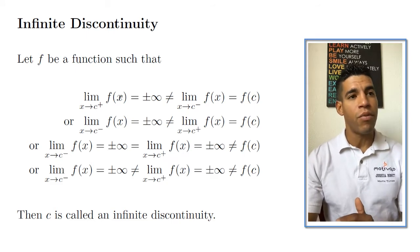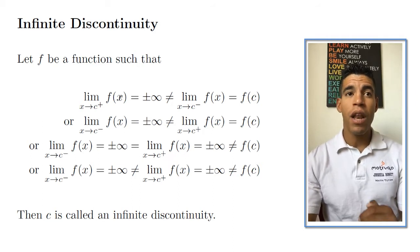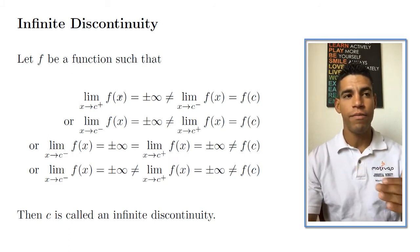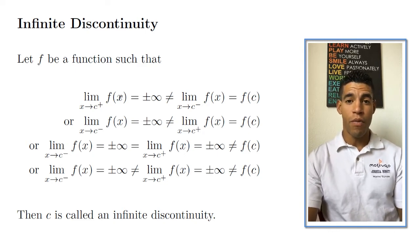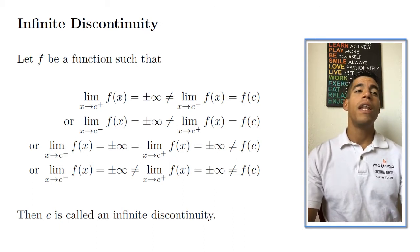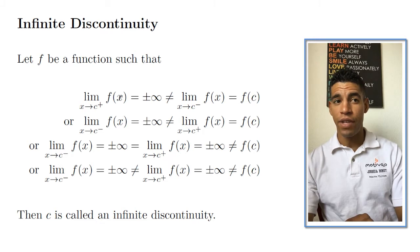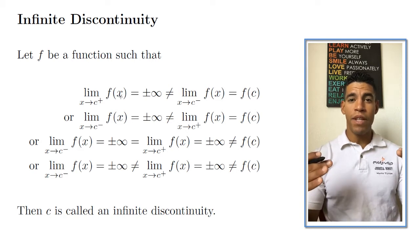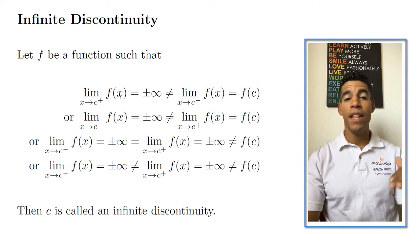The first condition: the limit as x approaches c from the right of f(x) is plus or minus infinity, which is not equal to the limit as x approaches c from the left, which equals f(c). The second condition is similar but the left-side limit equals plus or minus infinity. The third condition: both limits are approaching infinity and neither equals f(c), but they equal each other — both approaching positive or negative infinity.